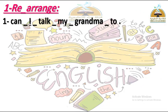تمرين rearrange - رتب الجملة. Number one: الكلمات هي can, I, talk, my, grandma. هو بيحط line تحت أول كلمة هنبدأ بها وهي الـ pronoun I.